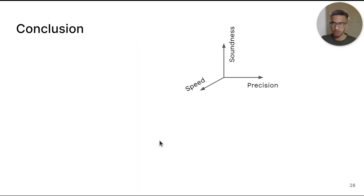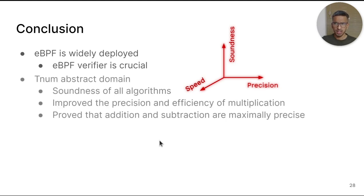To conclude, eBPF is widely deployed and static analysis is crucial to the safety and viability of the eBPF ecosystem as a whole. Our work contributes to the eBPF verifier along three dimensions: soundness, precision and speed. We have shown the soundness and improved the precision and speed of one part of the kernel's eBPF static analysis algorithms related to TNUM multiplication. We also prove in the paper that addition and subtraction from the kernel are maximally precise.